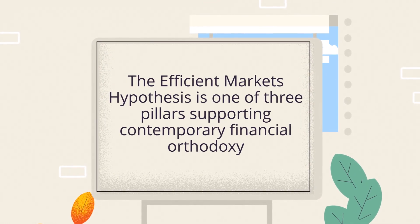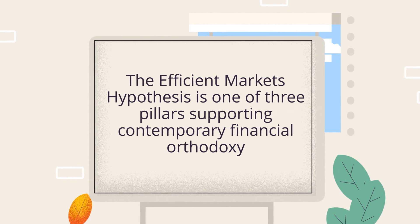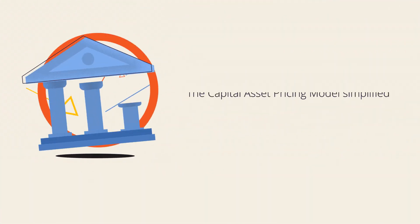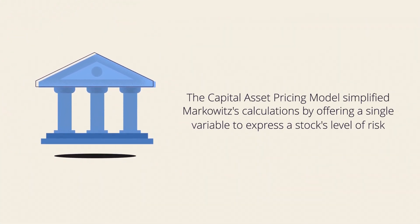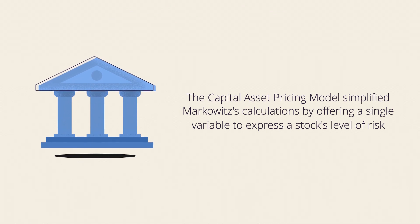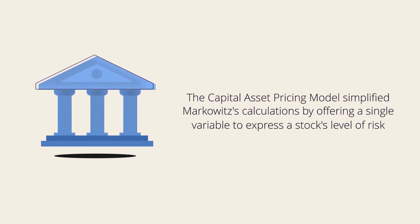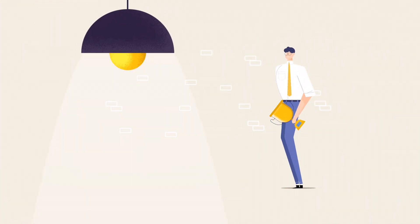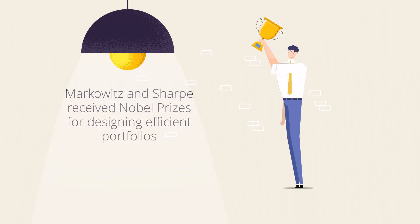The Efficient Markets Hypothesis is one of three pillars supporting contemporary financial orthodoxy. The capital asset pricing model simplified Markowitz's calculations by offering a single variable to express a stock's level of risk. Markowitz and Sharpe received Nobel Prizes for designing efficient portfolios that would deliver the highest return for a given level of risk.